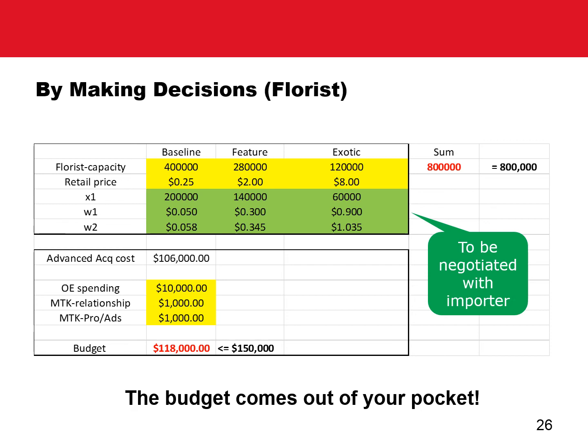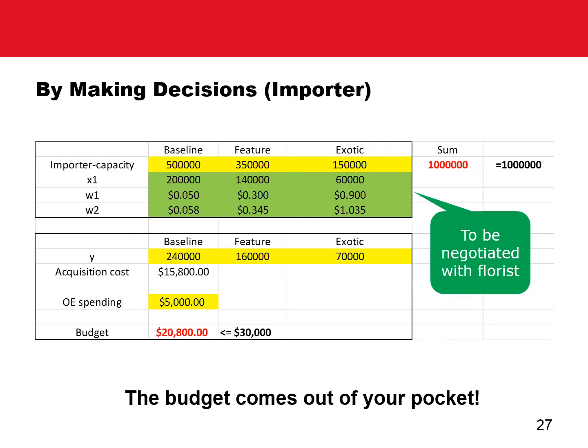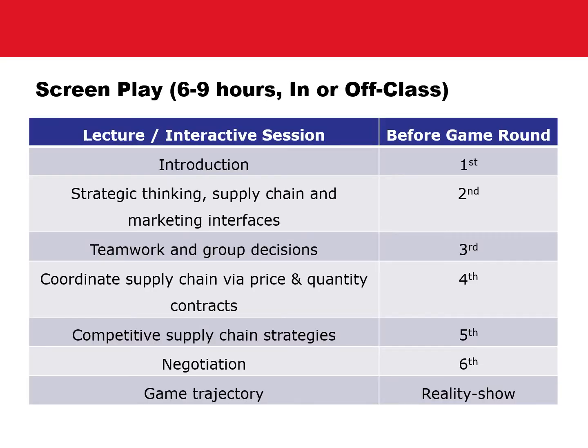The florist should check the budget first before submitting decisions. To ensure a fair game, no one can spend more than the budget, which is the same for all florists. The importer will make decisions on its production capacity allocation, on acquisition from the growers, and on OE spending. X1, W1, and W2 should be negotiated with the florist. If you run the game in class, it can take up to nine hours — in fact, we designed it for a one-and-a-half-day executive program. But you can also have students play off-class and just do the lectures in class, which usually take place in between rounds.